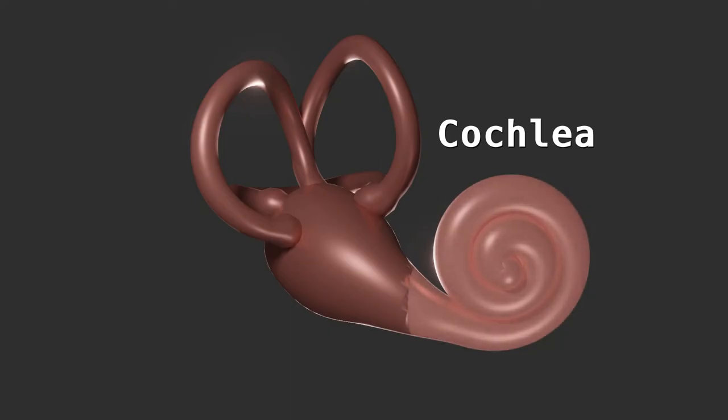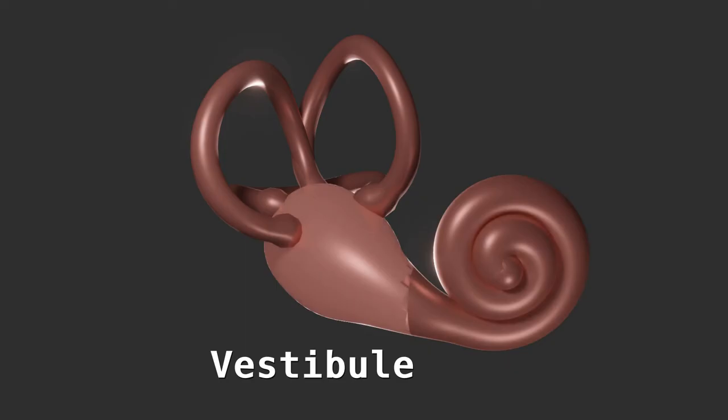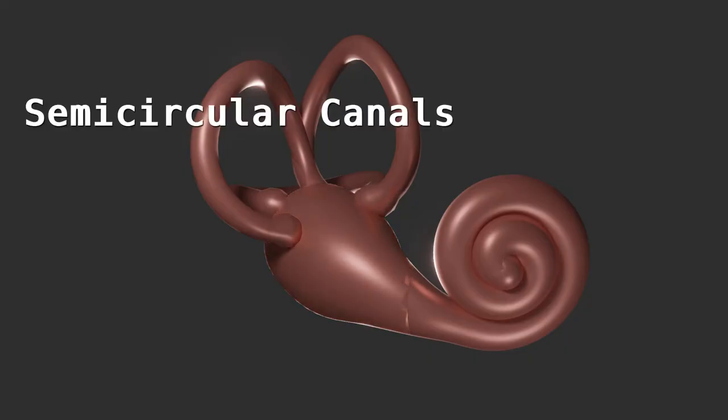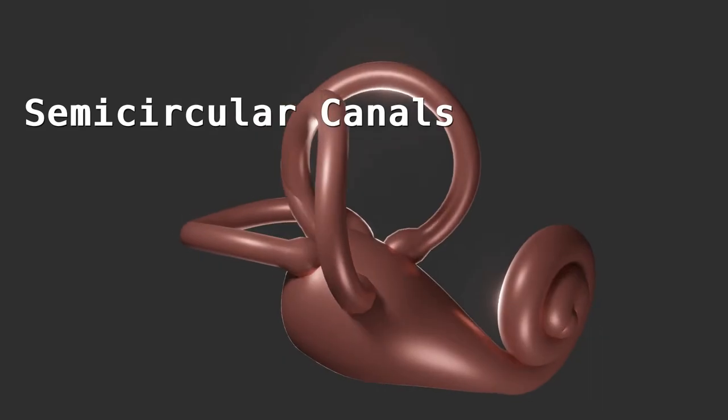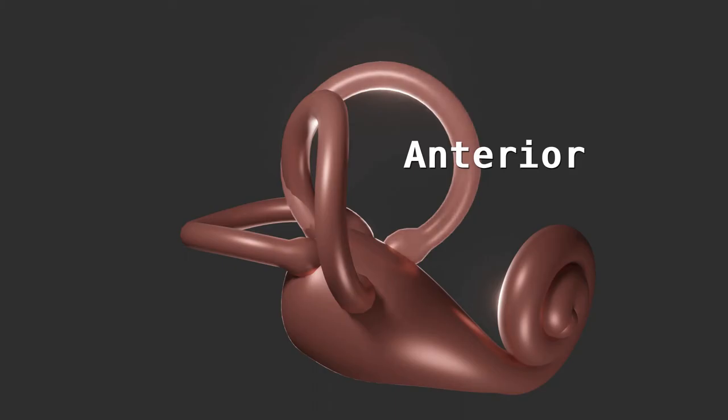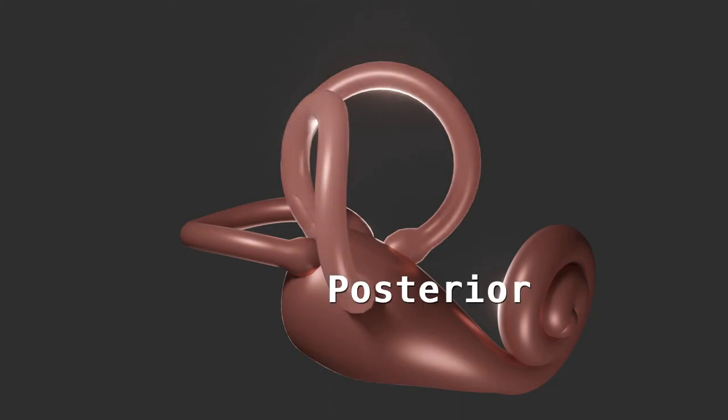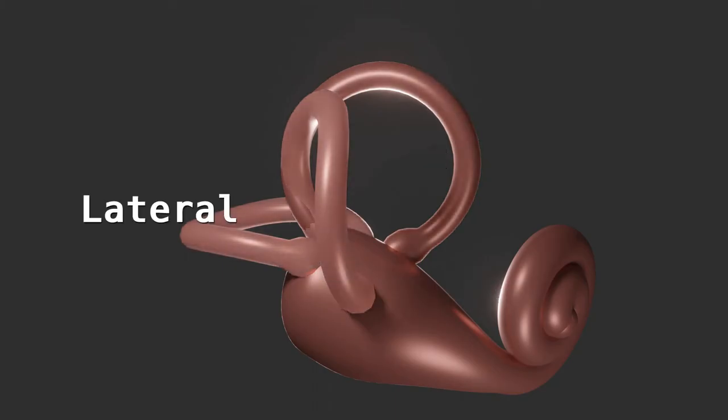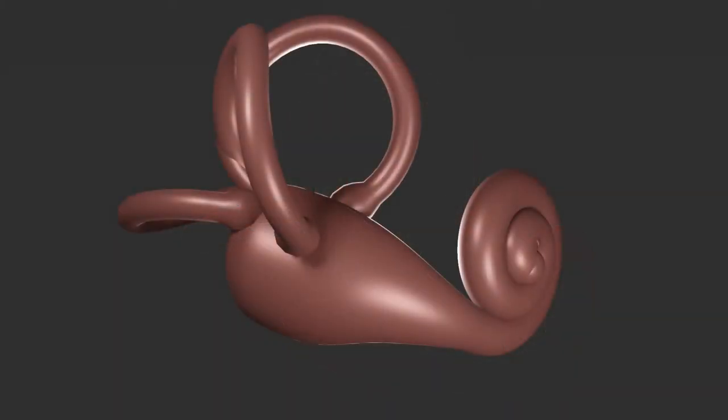The vestibular nerve provides balance and acceleration information to the brain. The cochlea contains sensory cells for the perception of hearing. The vestibule contains sensors for linear acceleration. The semicircular canals provide sensors for angular acceleration or rotation. There is an anterior ring, a posterior ring and a lateral ring. The posterior ring is oriented approximately perpendicular to the anterior ring. The lateral ring is roughly perpendicular to the other two.